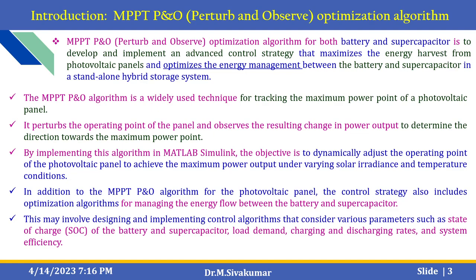The MPPT P&O algorithm is implemented using MATLAB Simulink to dynamically adjust the operating point of the photovoltaic panel to achieve maximum power output under varying solar irradiance and temperature conditions. The solar irradiance value and temperature conditions are applied using the PV array model Simulink block. In addition to the MPPT algorithm, the control strategy also includes an optimization algorithm for managing the energy flow between the battery and supercapacitors, considering parameters such as state of charge, load demand, charging and discharging rates and system efficiency. These can be observed using MATLAB Simulink scopes.